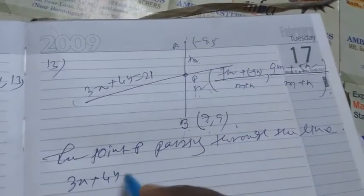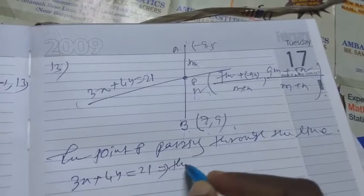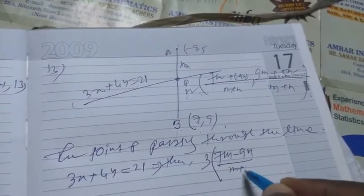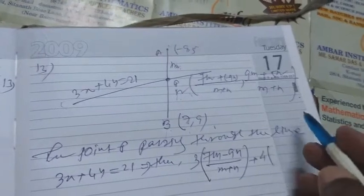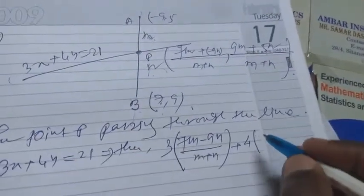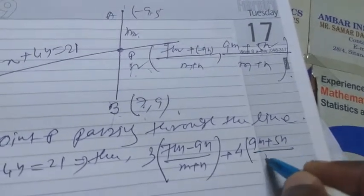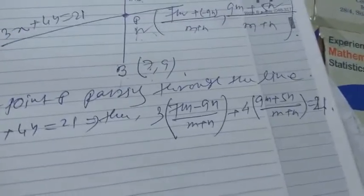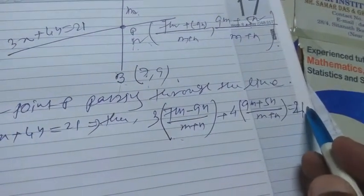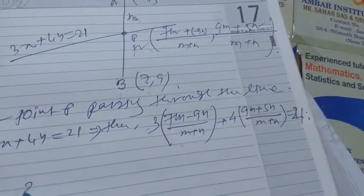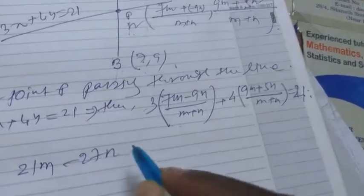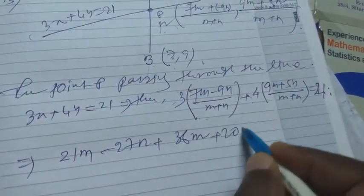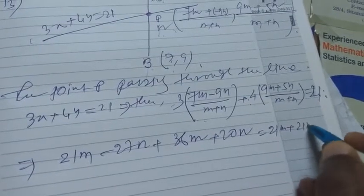Substituting into 3x + 4y = 21: 3·(7m - 9n)/(m+n) + 4·(9m + 5n)/(m+n) = 21. Taking LCM as (m+n) and multiplying both sides: 3(7m - 9n) + 4(9m + 5n) = 21(m+n), which gives 21m - 27n + 36m + 20n = 21m + 21n.